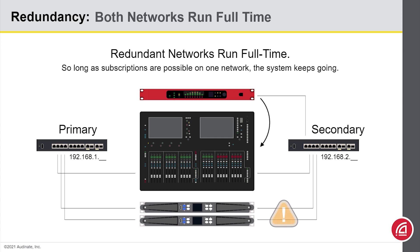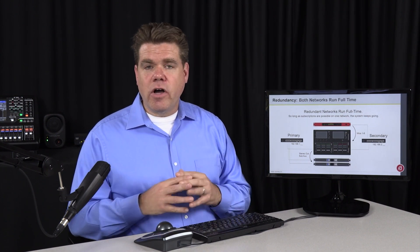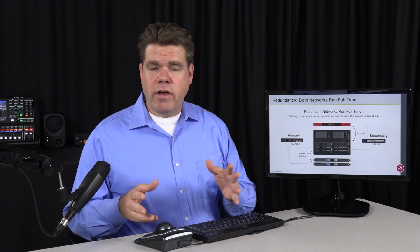Then, let's suppose somebody else drives a Zamboni across some of the cables for the secondary network. Well, the primary network can still carry the signal from the mixer to the amps. So both networks are running all the time. So long as you can make a connection across one or the other, then the signal gets through unaffected.